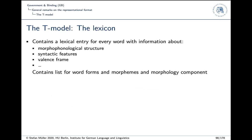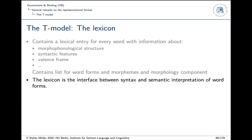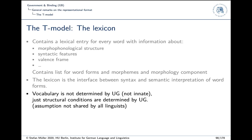The lexicon contains a lexical entry for every verb, word, or morpheme, with information about morphological structures, syntactic features, and valence frames. The lexicon is the interface between syntax and semantic interpretation of word forms. The vocabulary is not determined by Universal Grammar and is not innate — it wouldn't make sense for words like 'to Google,' 'iPod,' or 'Gauben' to be genetically determined in our vocabulary.